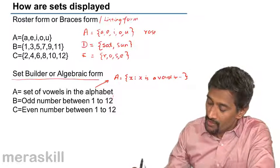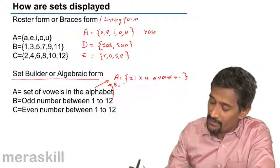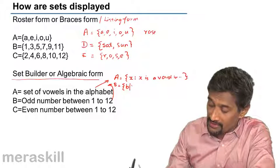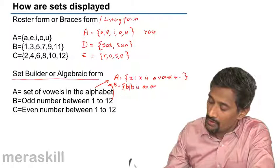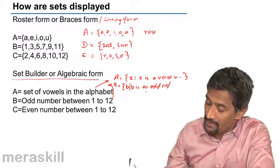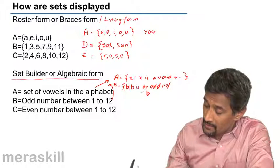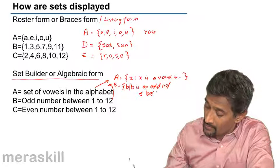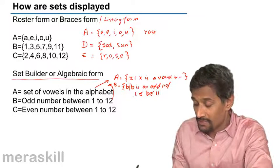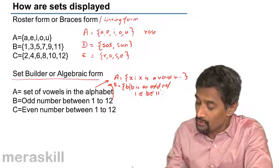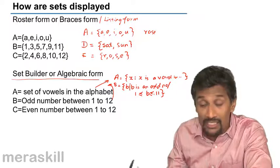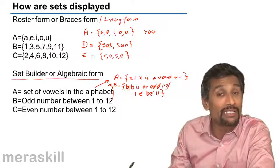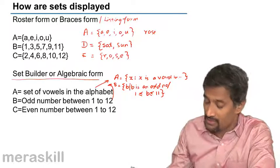For set B, we can write it as: b such that — where 'such that' can be written as a colon or a straight line — B is an odd number. We then add the condition that B is greater than or equal to 1 and less than or equal to 11. So you are writing it in descriptive, algebraic, or set-builder form.